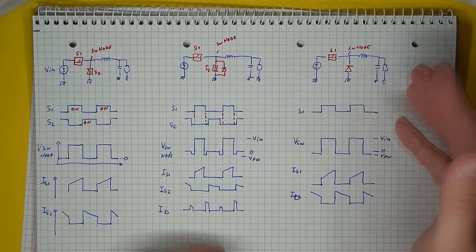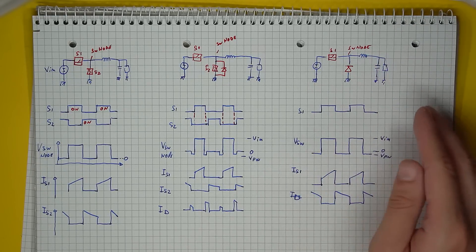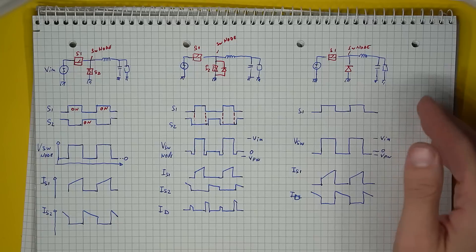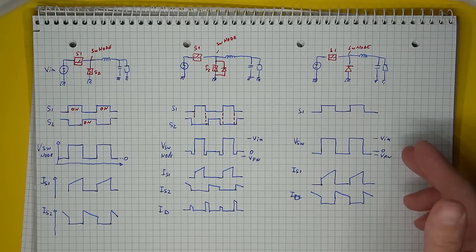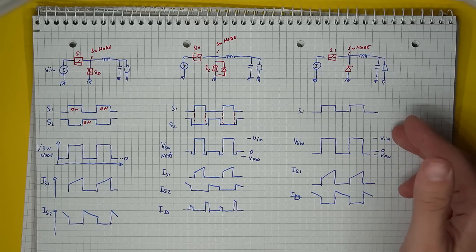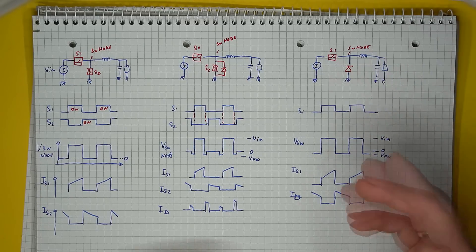Finally, when you have a single switch buck converter, the diode fully takes over the role of the second switch, conducting when the high side switch isn't. So here the switching node will oscillate between the input voltage and the forward voltage of the diode.